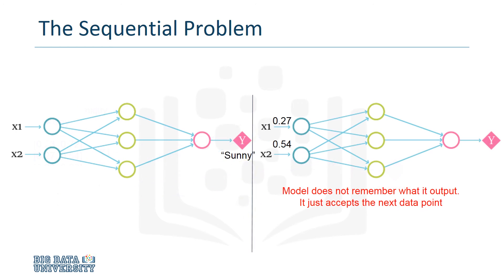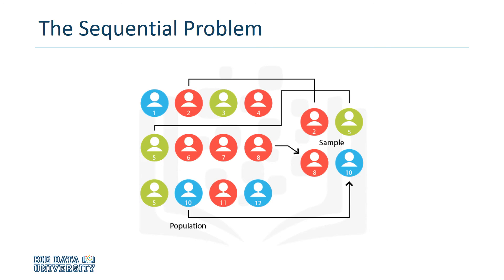It's important to note that the model does not remember the data that it just analyzed. All it does is accept input after input and produce individual classifications. A traditional neural network assumes that the data is non-sequential, and that each data point is independent of the others.